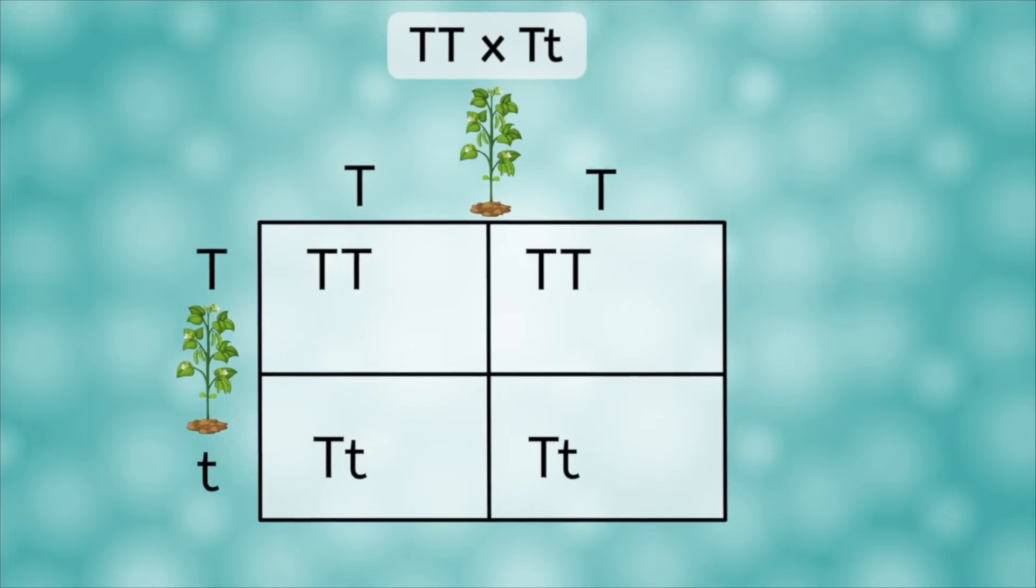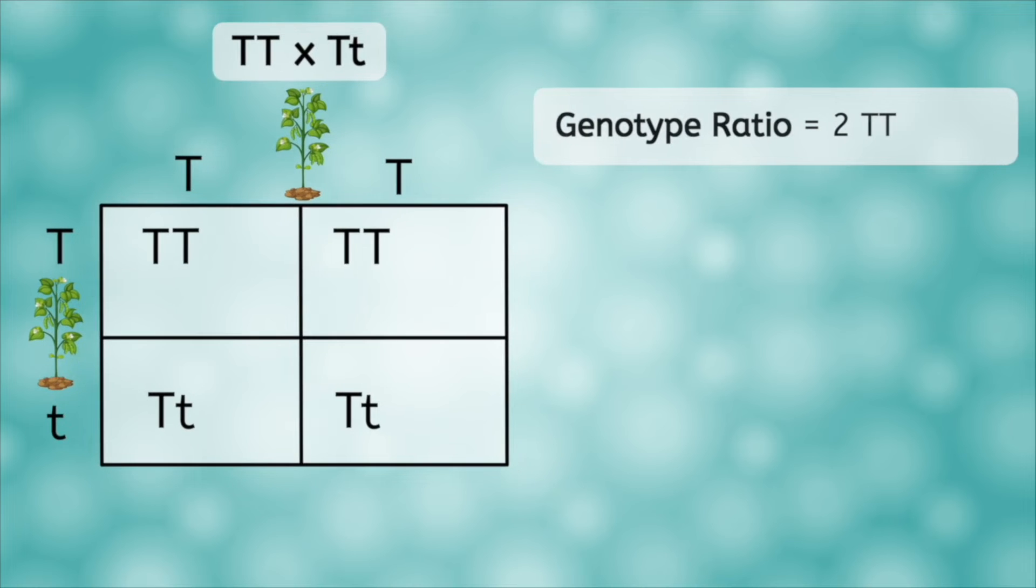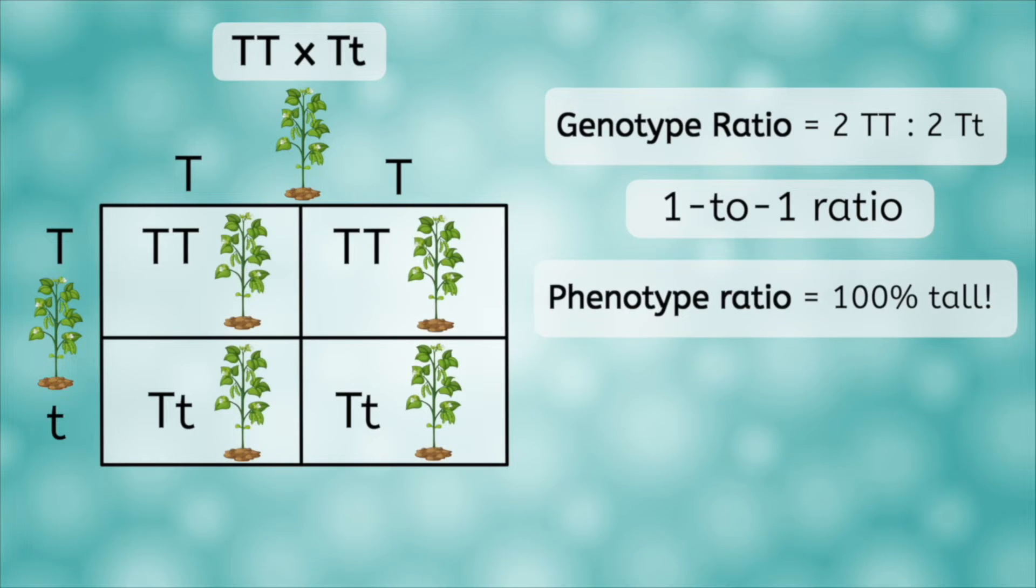Can you figure out what the genotype ratio is? We have two big T, big T's and two big T, little t's. When the numbers are equal like this, we'll often say it's a one to one ratio. What about the phenotype ratio? Well, they all have at least one big T, so they're all tall.